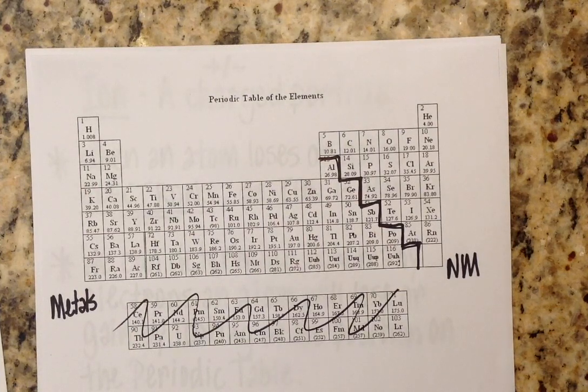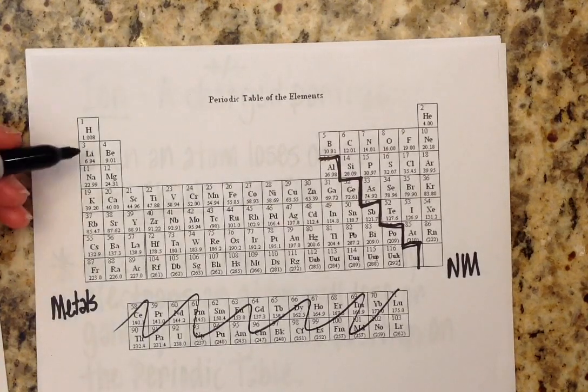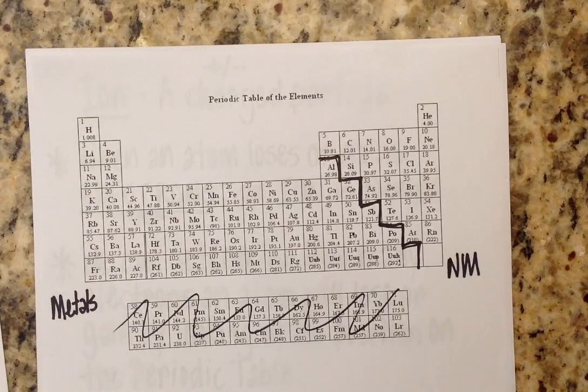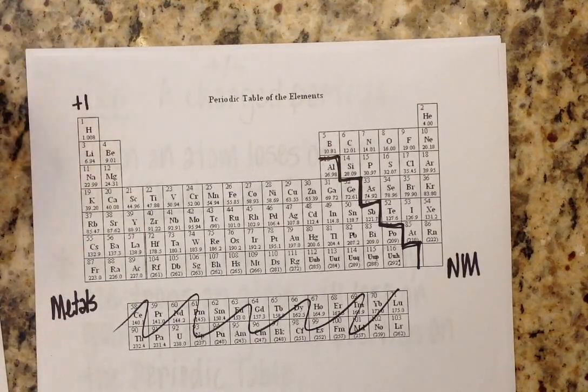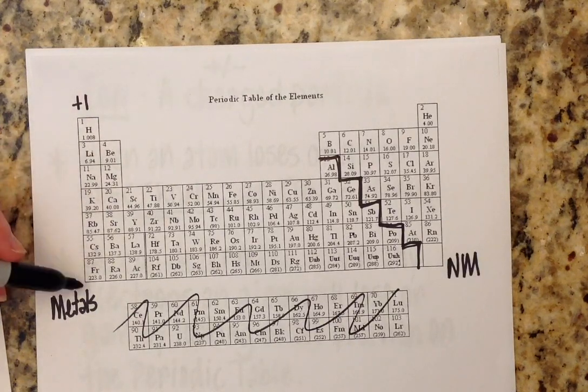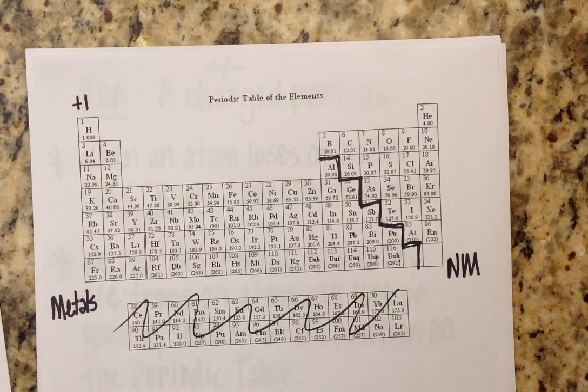So our metals give away electrons. And when a neutral atom gives away negative particles, it is actually becoming more positive because you're giving away your negatives. Group one of the periodic table will always have an ionic charge of plus one. These guys are called your alkali metals. They have one valence electron. And because of that, they give it away really easily.